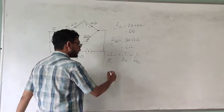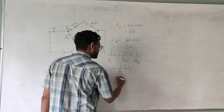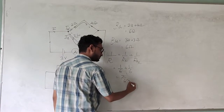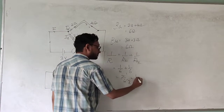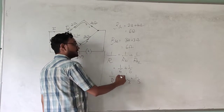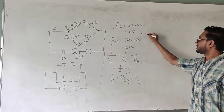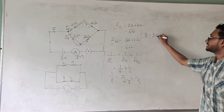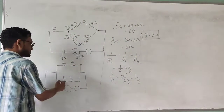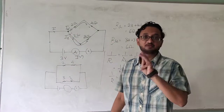Substituting the values: one over R equals one over six plus one over six, which equals two over six, or one over three. Since this is one over R, we take the inverse to find the total resistance: R equals three ohms. So the total resistance of the whole combination is three ohms.